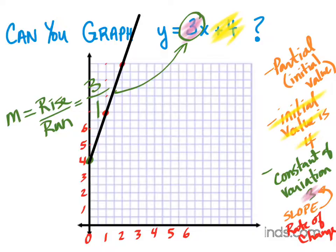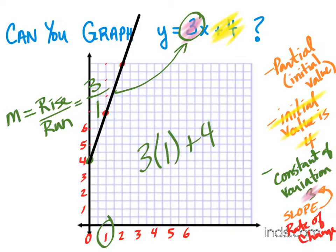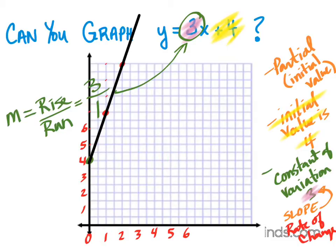You could also just substitute your x values into the equation. For example, if x equals one: three times one plus four equals seven. So starting at x equals one, y equals seven — there's the point confirmed on the graph. You can always double-check that way. Everybody cool with that? Any other questions before we move on? Good job, people.